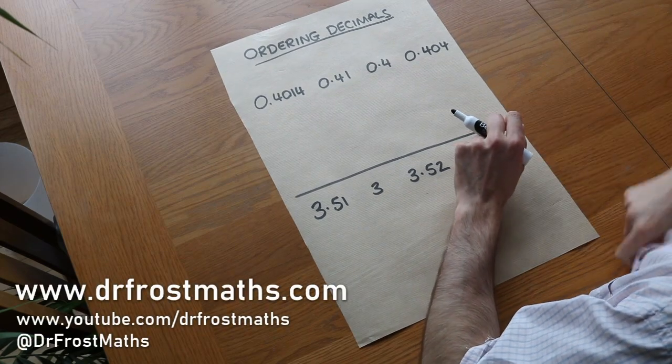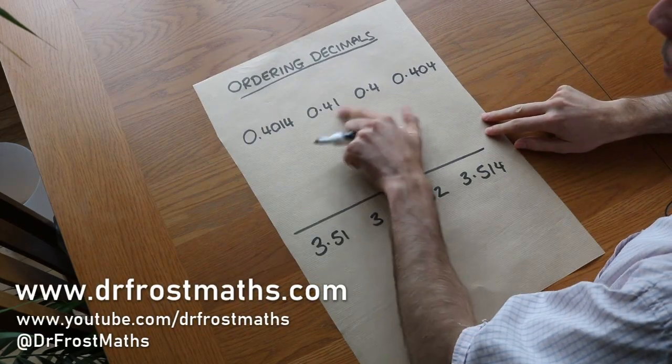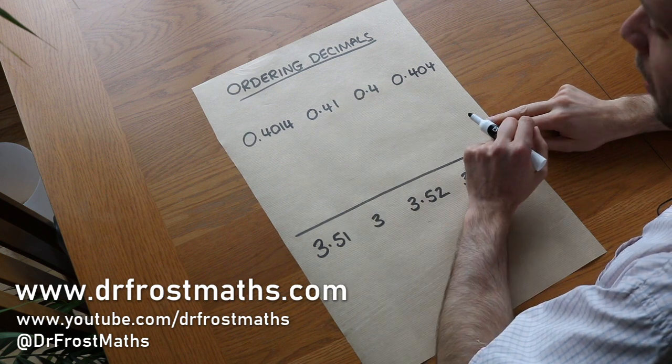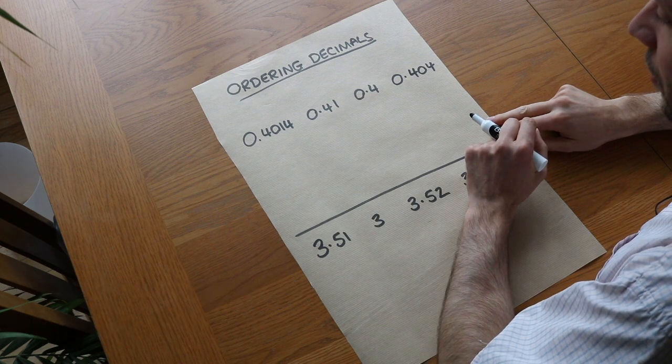Hello and welcome to this video on ordering decimals. Now we have these four numbers here, decimal numbers, and we want to put them in ascending order based on their value.